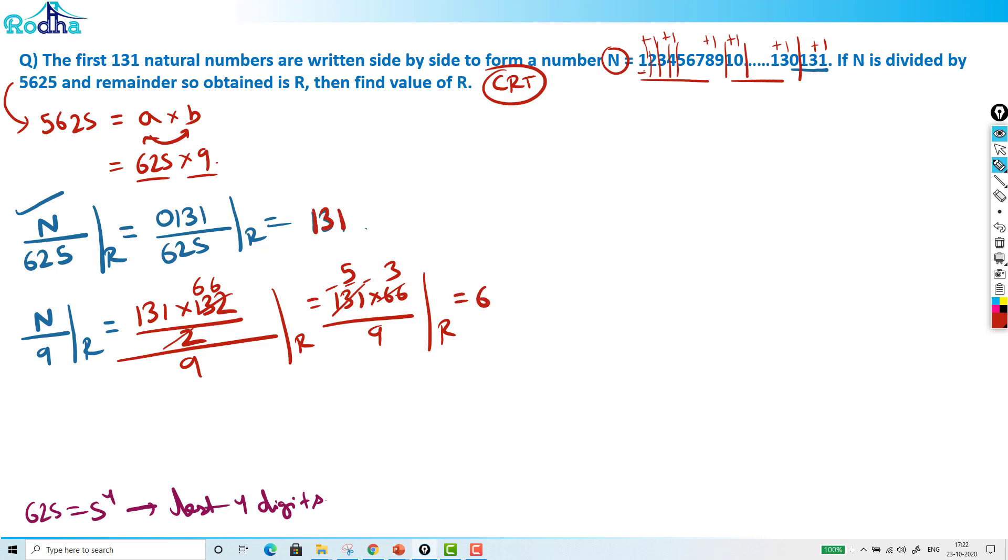So here I got remainder 131, here I got remainder 6. What I will do now? So that means, we will write in this format: a number when divided by 625, remainder is 131. The format is, number is of the form 625x plus 131. Same number when divided by 9, remainder is 6. That is 9y plus 6. So by Chinese remainder theorem, I am looking to satisfy the first value of this expression.